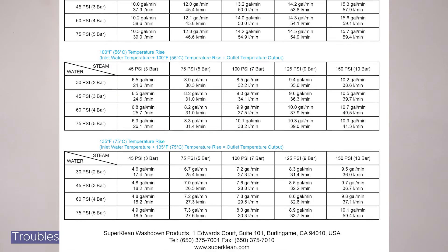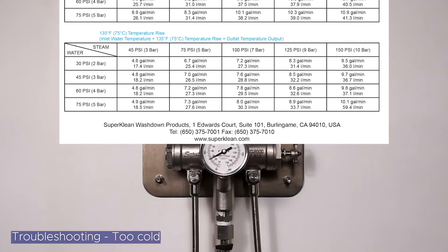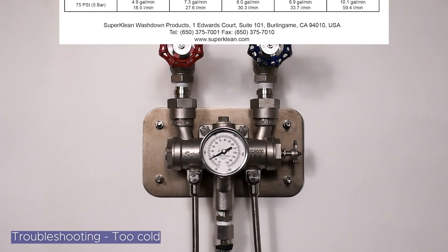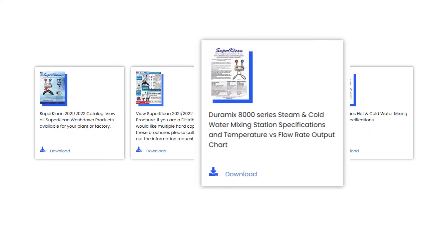Higher temperatures can yield lower flow rates depending on the steam input from your factory. Your exact water output at any temperature will depend on the steam and water pressure in your factory. Visit our website for a detailed temperature rise versus flow rate output chart.